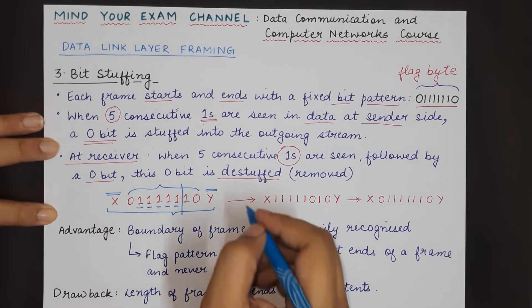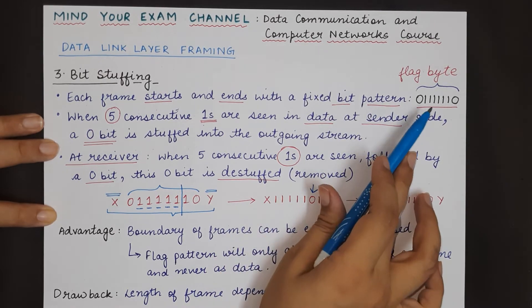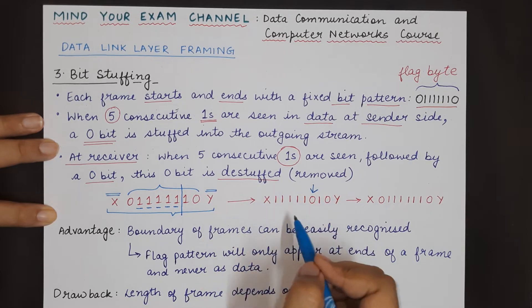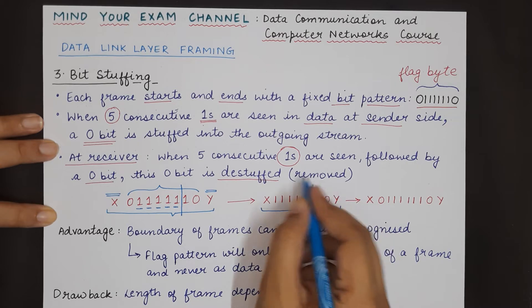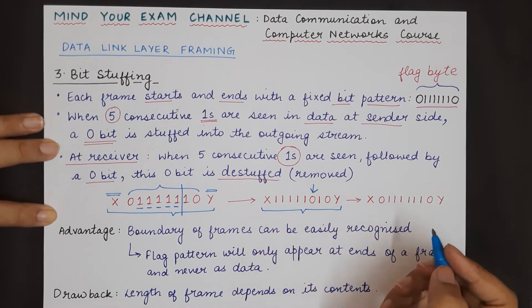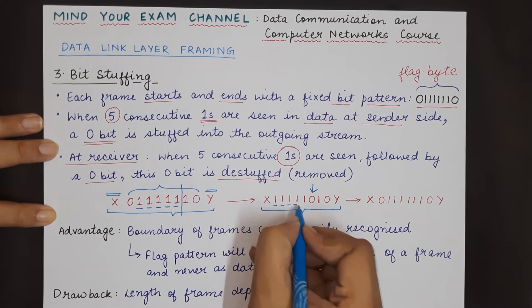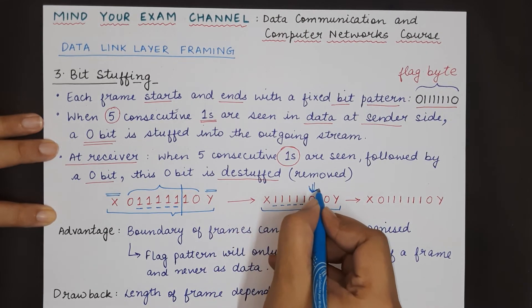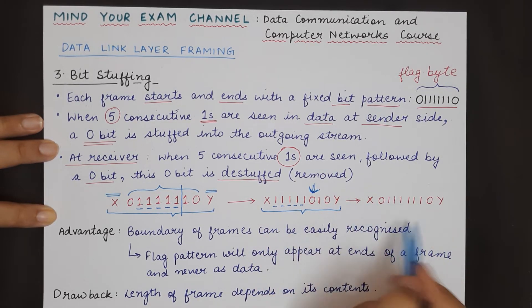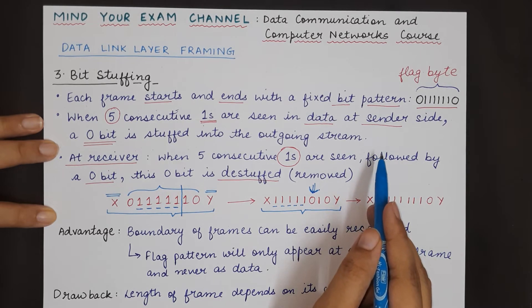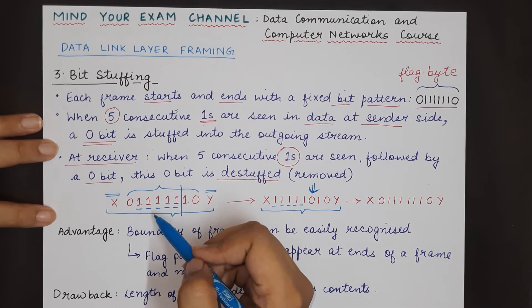What the sending side data link layer will do: after five consecutive ones, at this location it will insert a zero so that this flag pattern cannot happen here. It sends this stuffed pattern to the receiver. When the receiver receives this pattern, it sees that five ones are followed by this particular zero, so it will remove this zero and send the remaining bits to the network layer. The remaining bits will be the same as the original bit pattern.